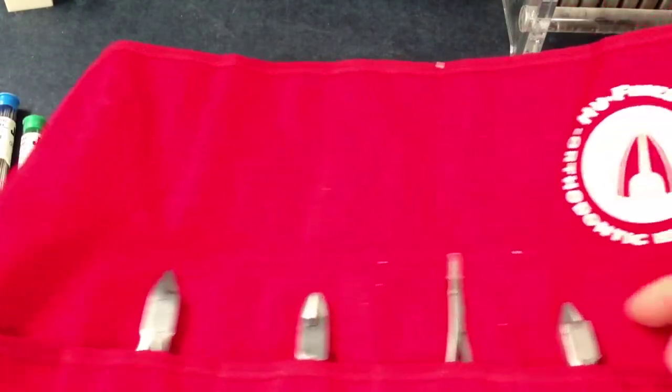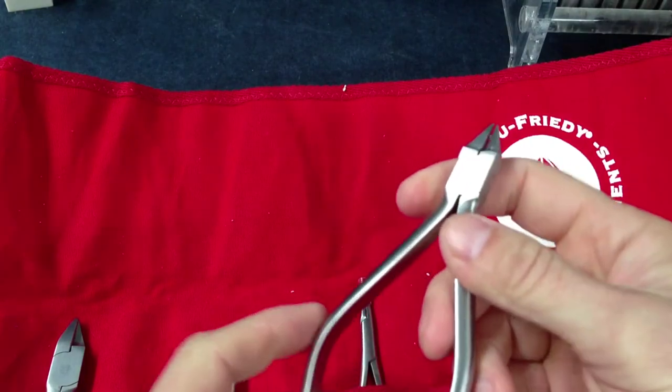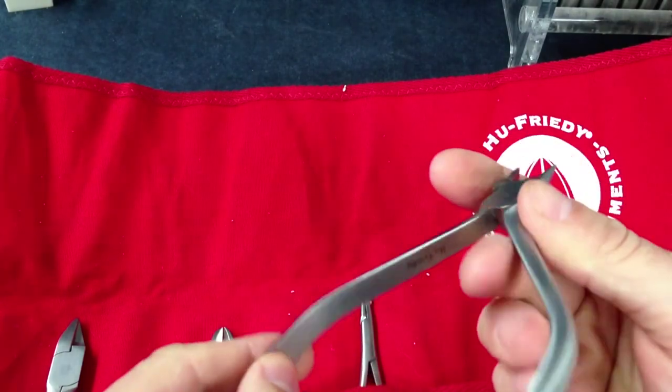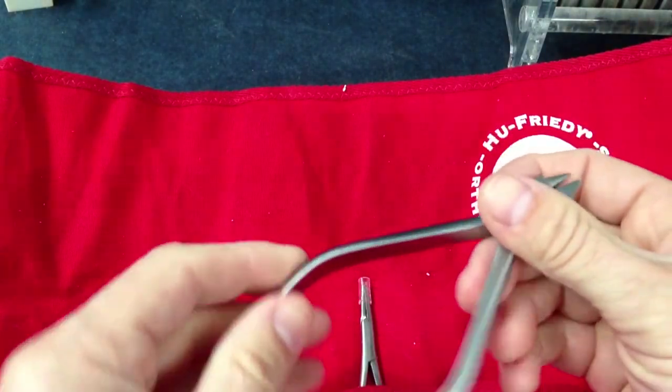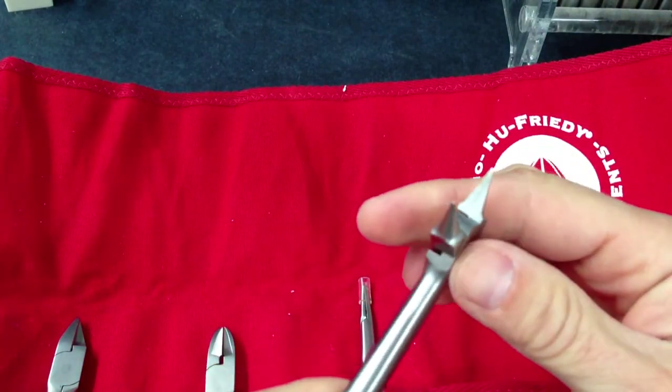The pliers you will use are your bird beak pliers, specifically the Hu-Friedy 678-304 bird beak pliers. They are non-serrated.